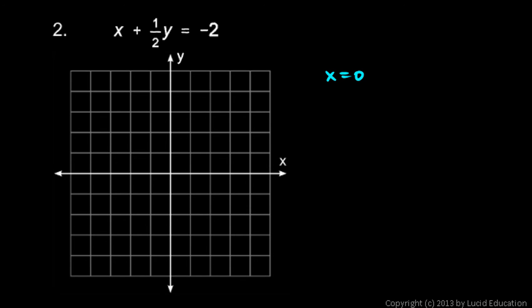Let x equals zero and see what happens. If x equals zero, we're left with one-half y equals negative 2. So y has to be negative 4. You could take this equation and just multiply both sides by two, and you're left with y equals negative 4. So that's my y-intercept, is negative 4.